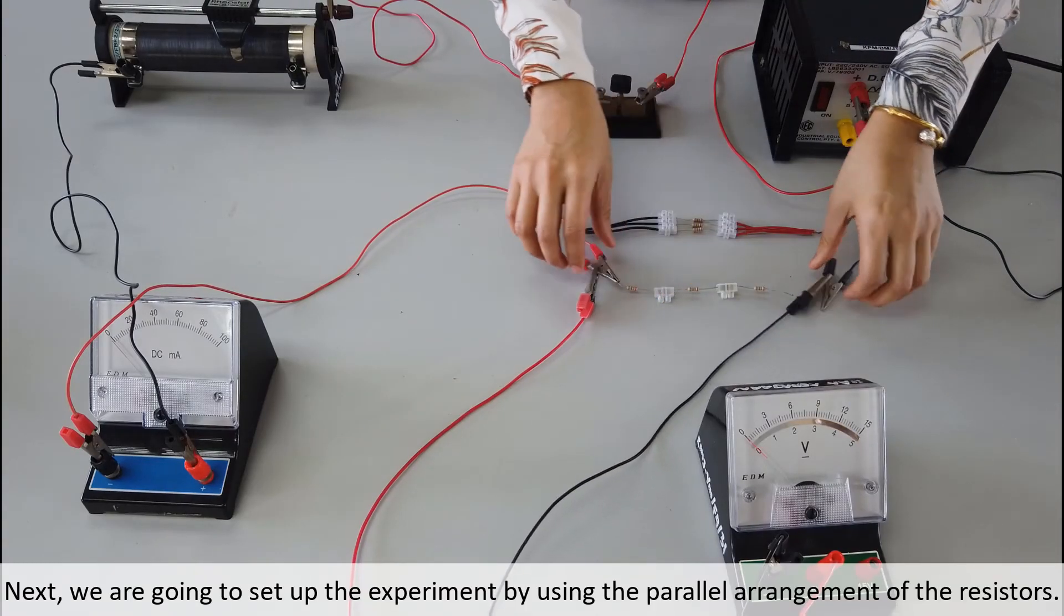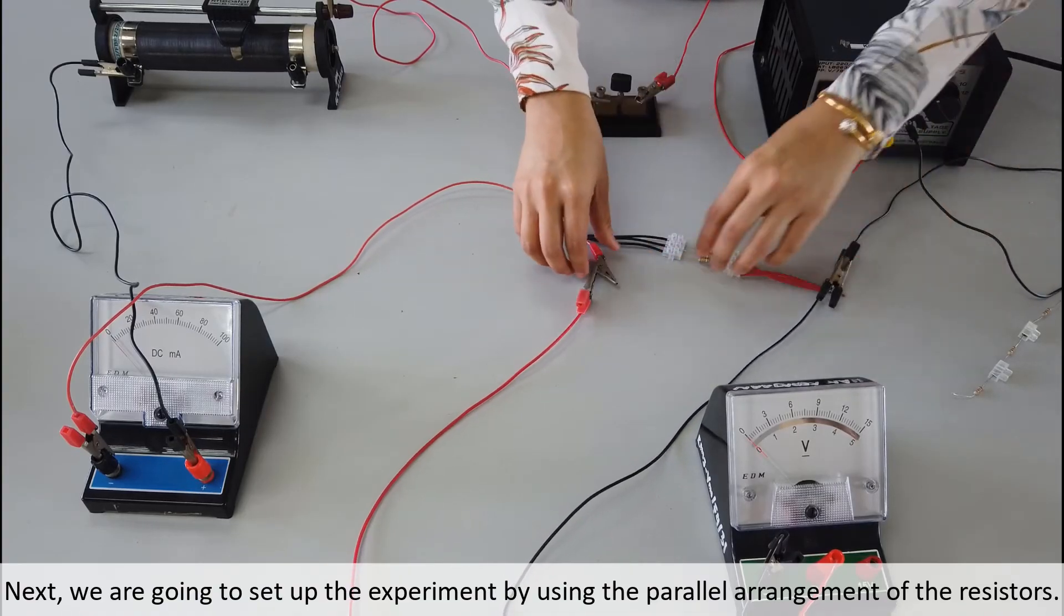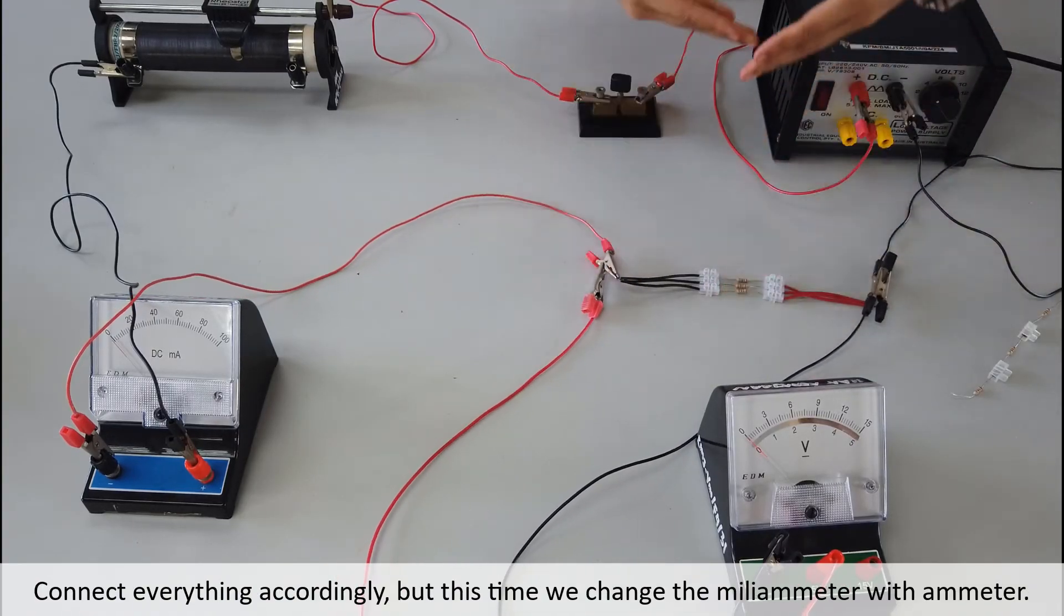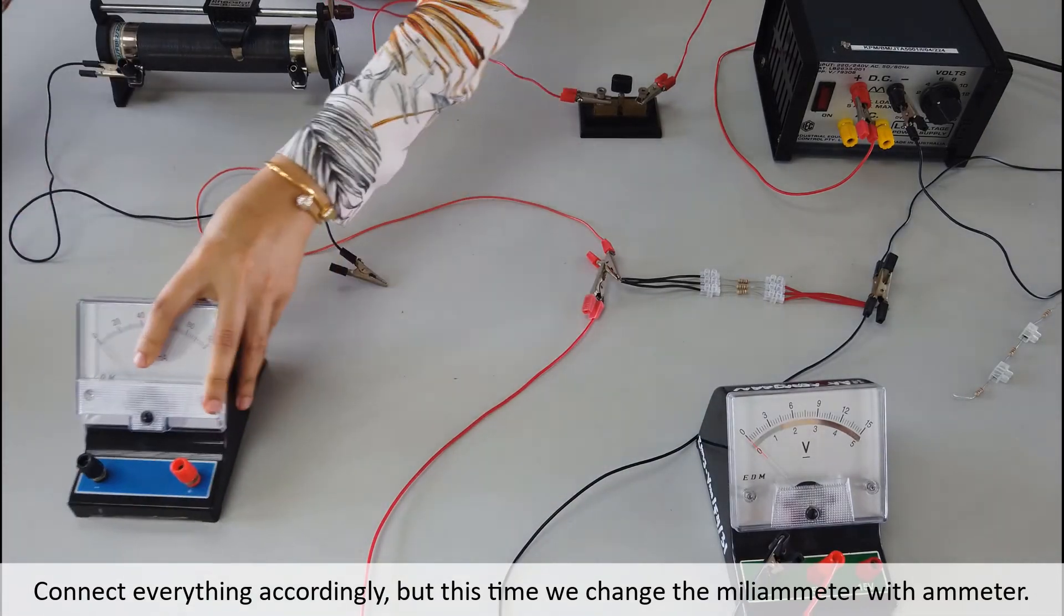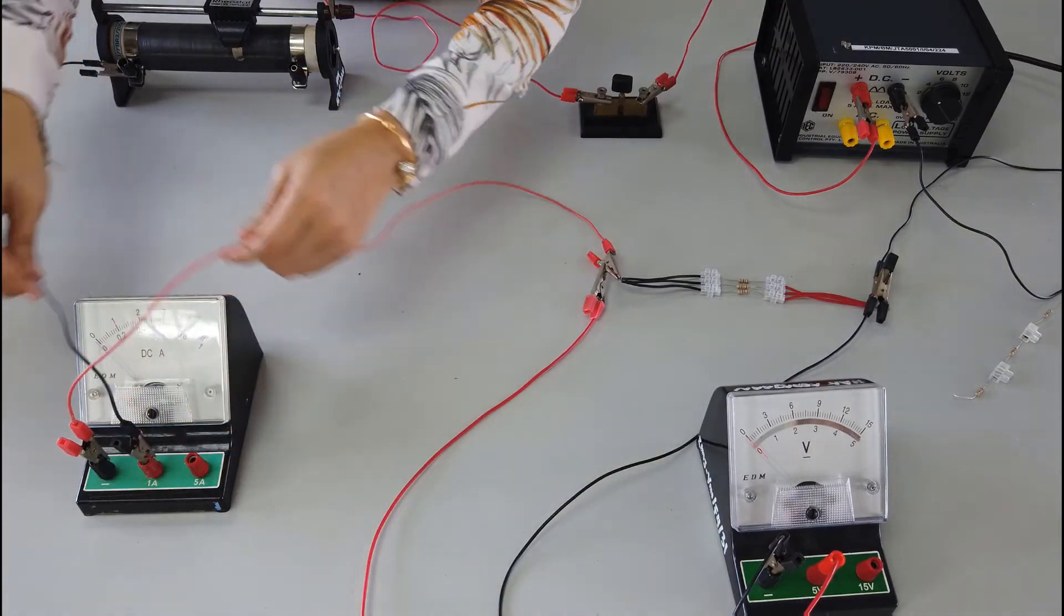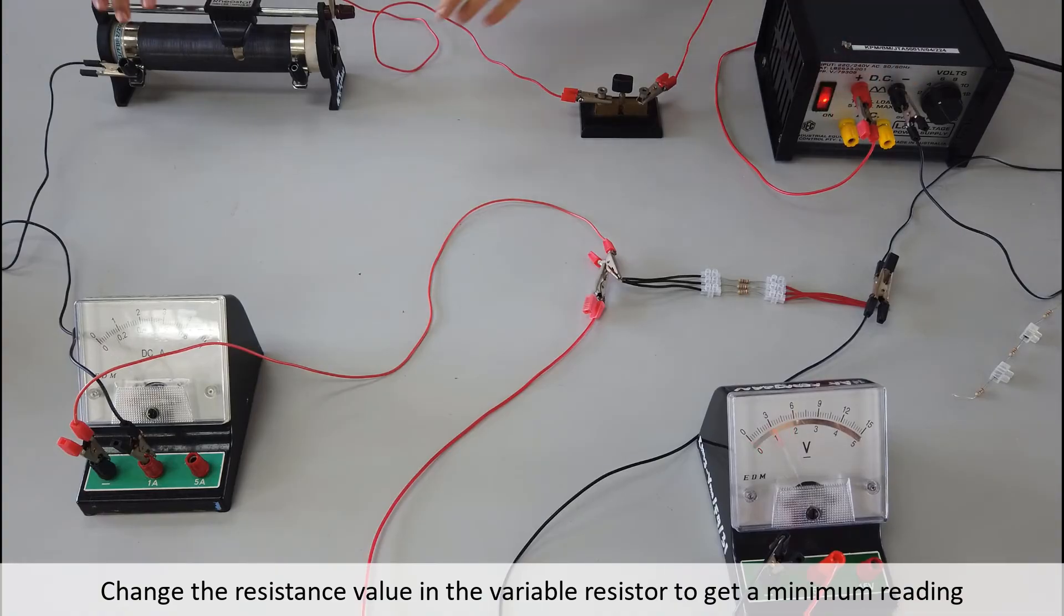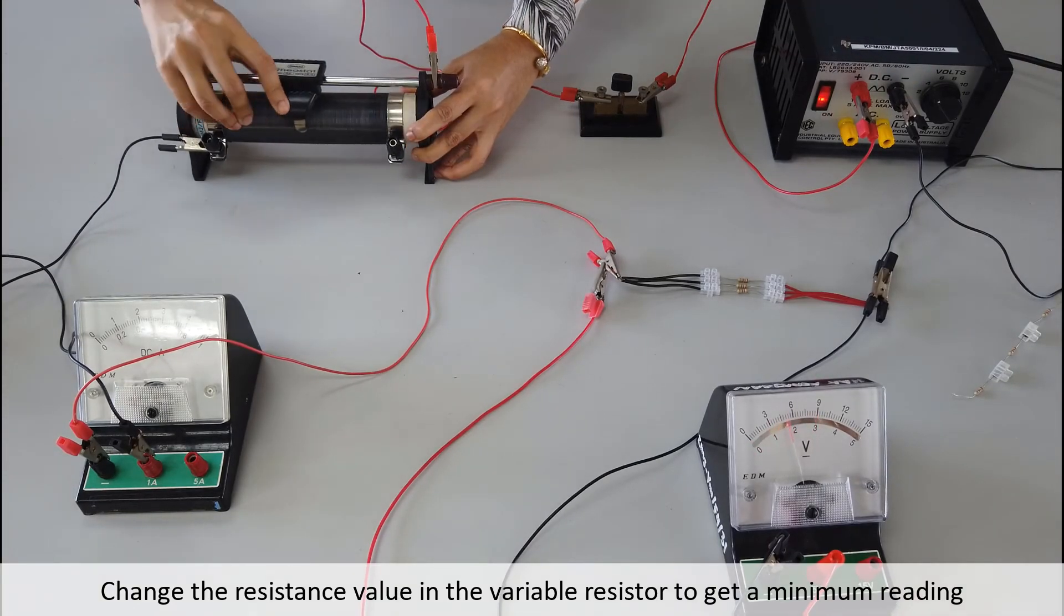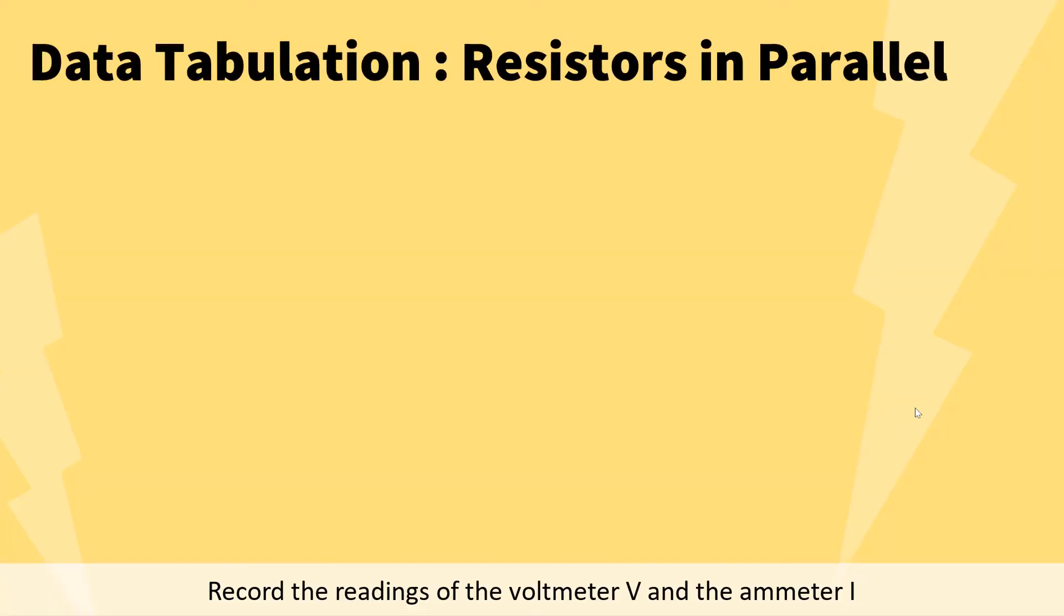Next, we are going to set up the experiment by using the parallel arrangement of the resistors. Connect everything accordingly. This time, we change the milliammeter with ammeter. We change the resistance value in the variable resistor to get a minimum reading of the ammeter. Record the reading of the voltmeter V and the ammeter I.